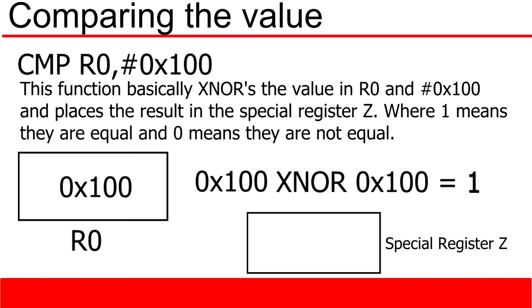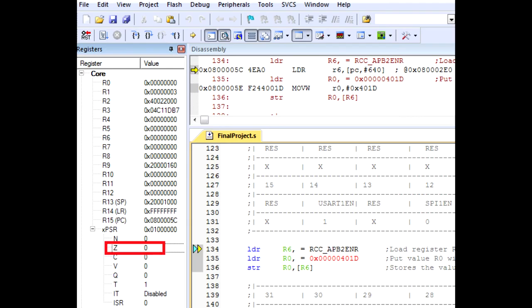And a 0 when they are not. The result of the XNOR comparison is then stored in the special Z register. I have not yet spoken about special registers, but they are an easy concept. You can view the contents of your special registers in the debug screen as pictured here.